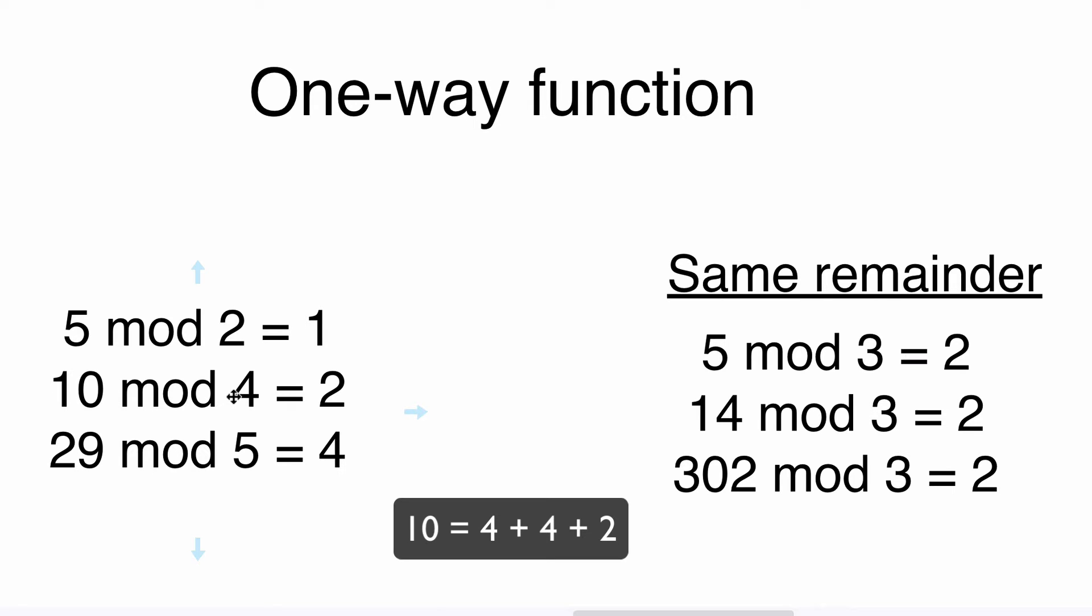Another example is twenty-nine mod five. Twenty-nine is equal to five times five plus four, that's why the remainder of division of twenty-nine by five is four.